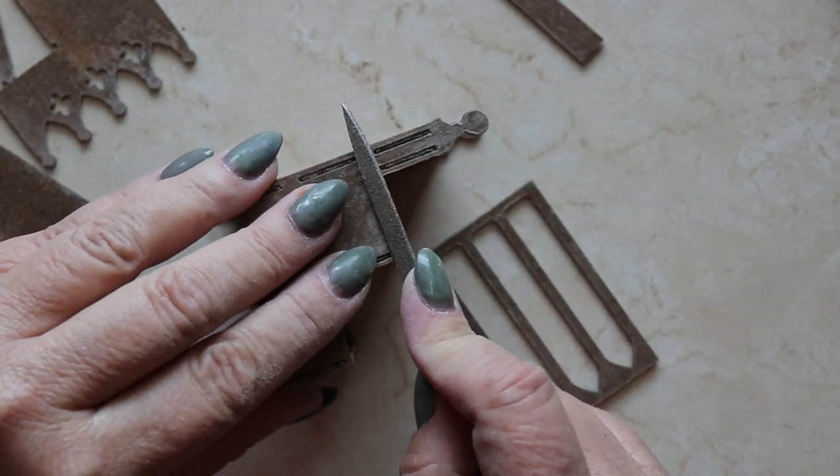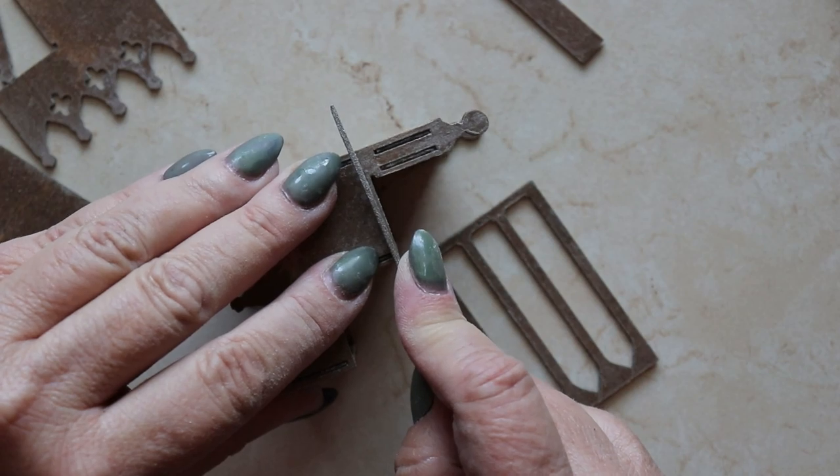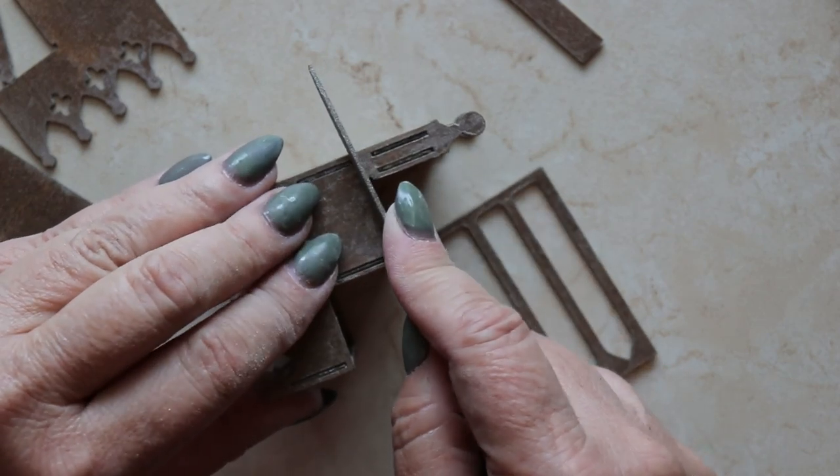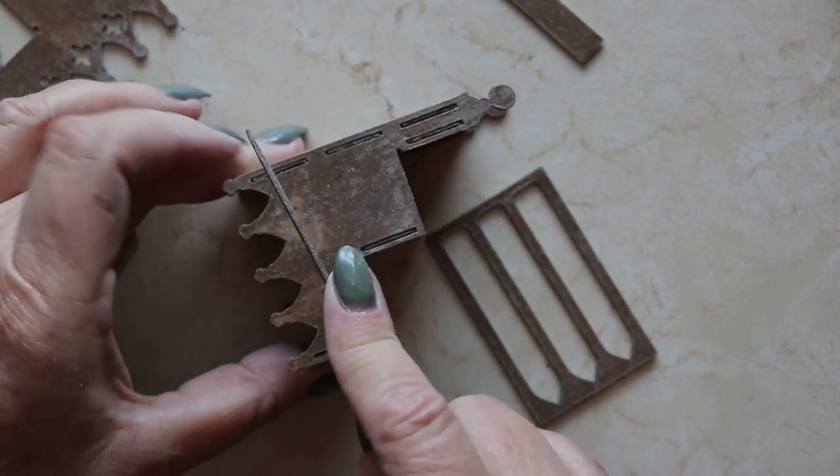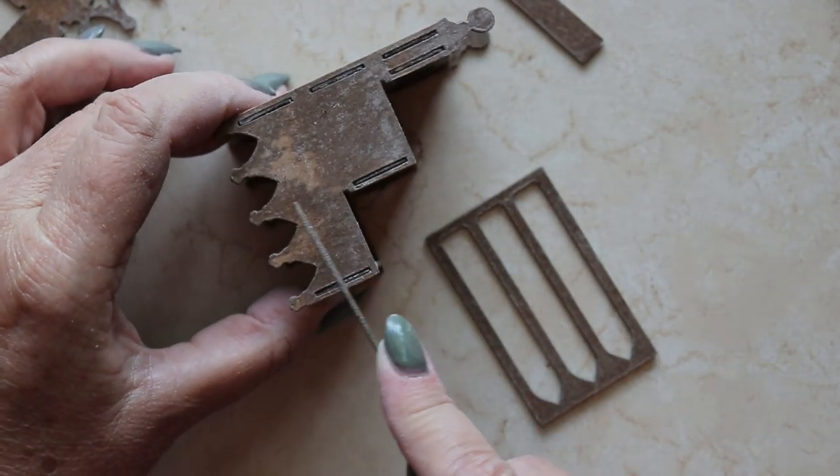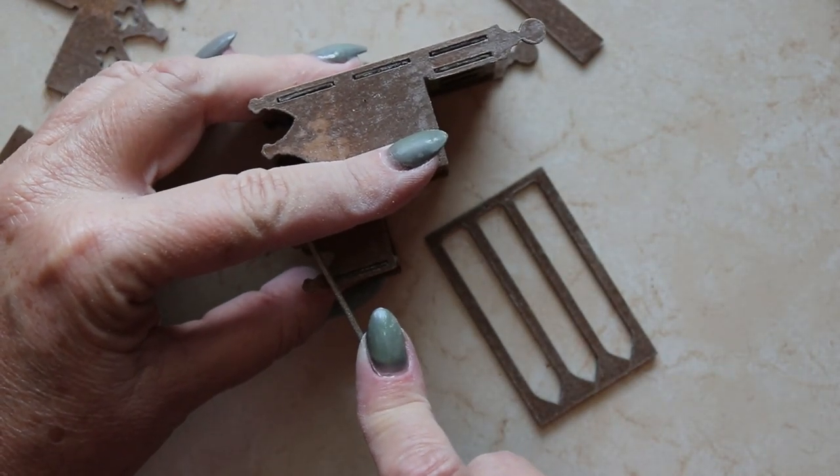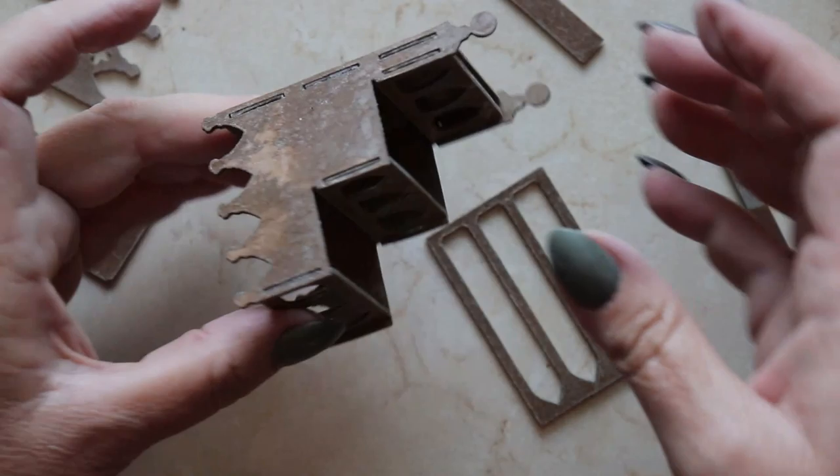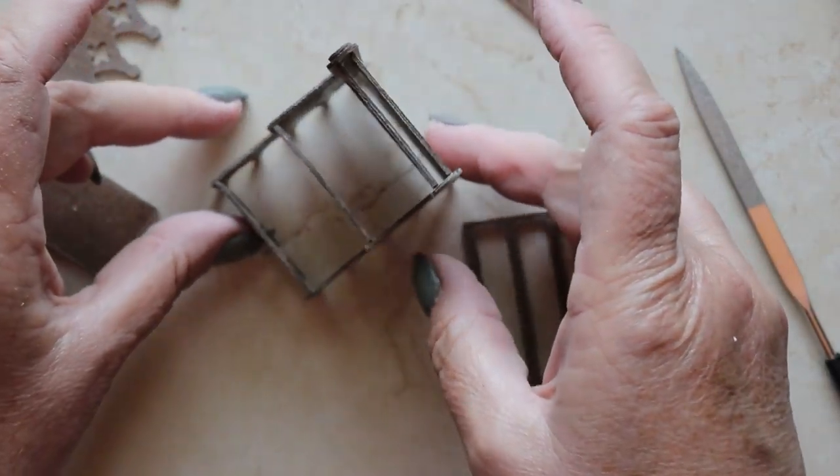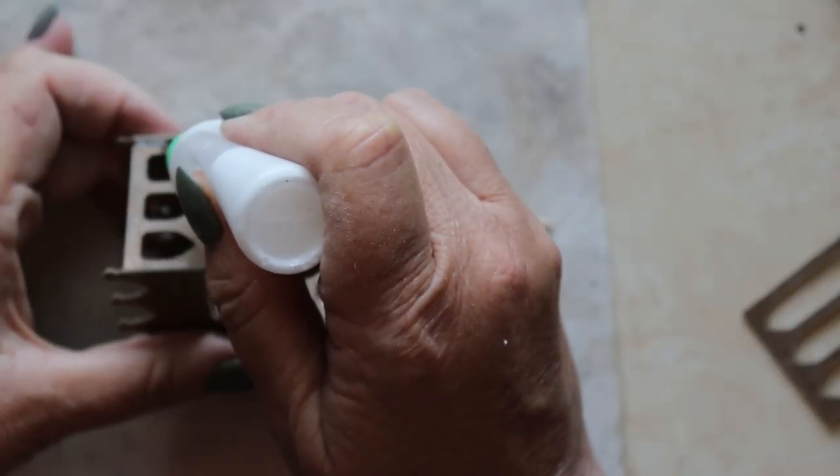It can be helpful to use an implement like this to help press the chipboard down securely around each of the construction tabs. At this point, the piece should be firmly enough attached so that it holds its shape.